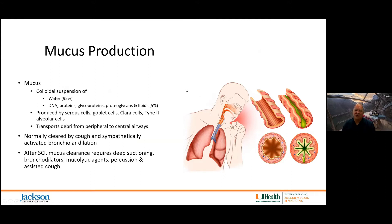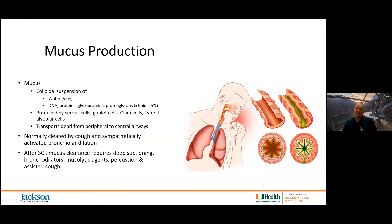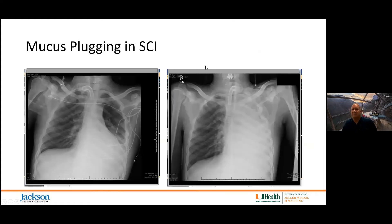After high spinal cord injury, however, we simply aren't able to clear mucus. We end up with tight pipes full of secretions, and mucus plugging is one of our major issues to worry about.